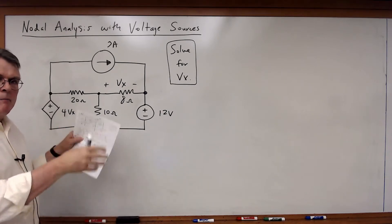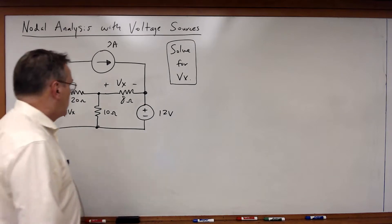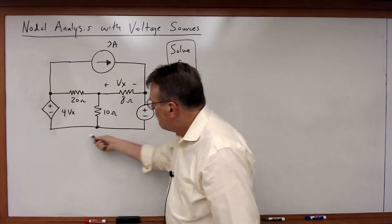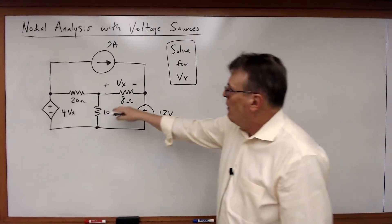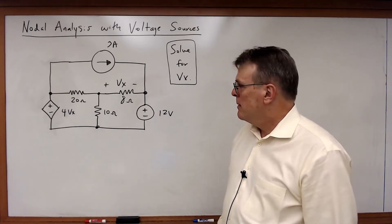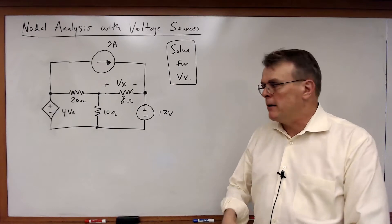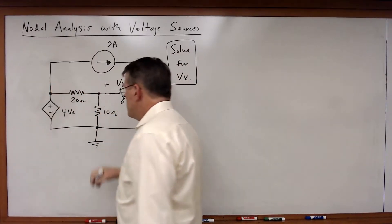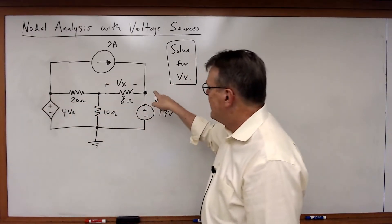So in this case I've got one, two, three, four essential nodes, and although all four essential nodes have three branches connected to them, the one on the bottom is really a good choice, the best choice for ground. And the reason for that is if I choose that bottom node, it means that this essential node and this essential node are going to be defined by those two voltage sources.